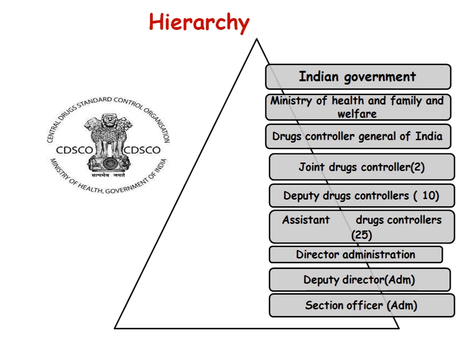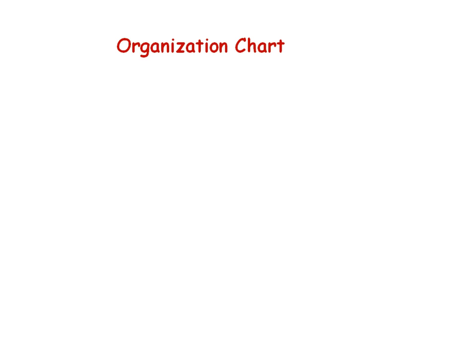The hierarchy of CDSCO: at the top is the Indian Government — the Minister of Health and Family Welfare. Below that is the Drug Controller General of India, then Joint Drug Controller, then Deputy Drug Controller, then Assistant Drug Controller, Director, Administration, Deputy Director, and Section Officers.